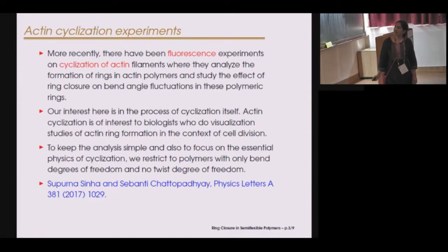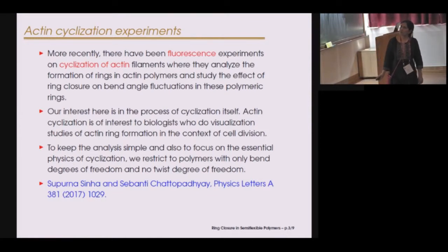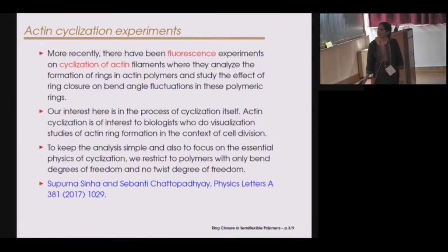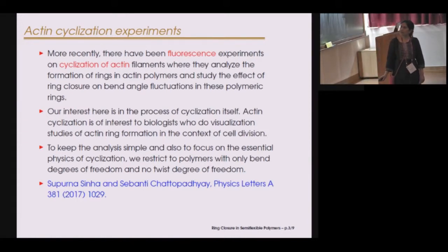More recently there have been fluorescence experiments on cyclization of actin filaments, where they analyze the formation of rings in actin polymers and study the effect of ring closure on bend angle fluctuations in these polymeric rings. Our interest here is in the process of cyclization itself. Actin cyclization is of interest to biologists who do visualization studies of actin ring formation in the context of cell division. To keep the analysis simple and to focus on the essential physics of cyclization, we restrict to polymers with only bend degrees of freedom and no twist degree of freedom.